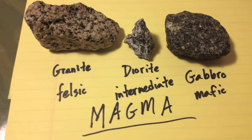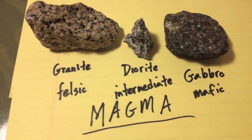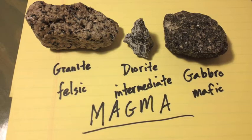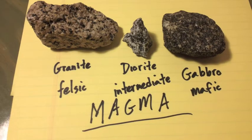We're going to basically run it like this. Granite, diorite, and gabbro, felsic, intermediate, and mafic are the three compositions we're dealing with. Felsic, high in silica, intermediate, and mafic, high in iron.